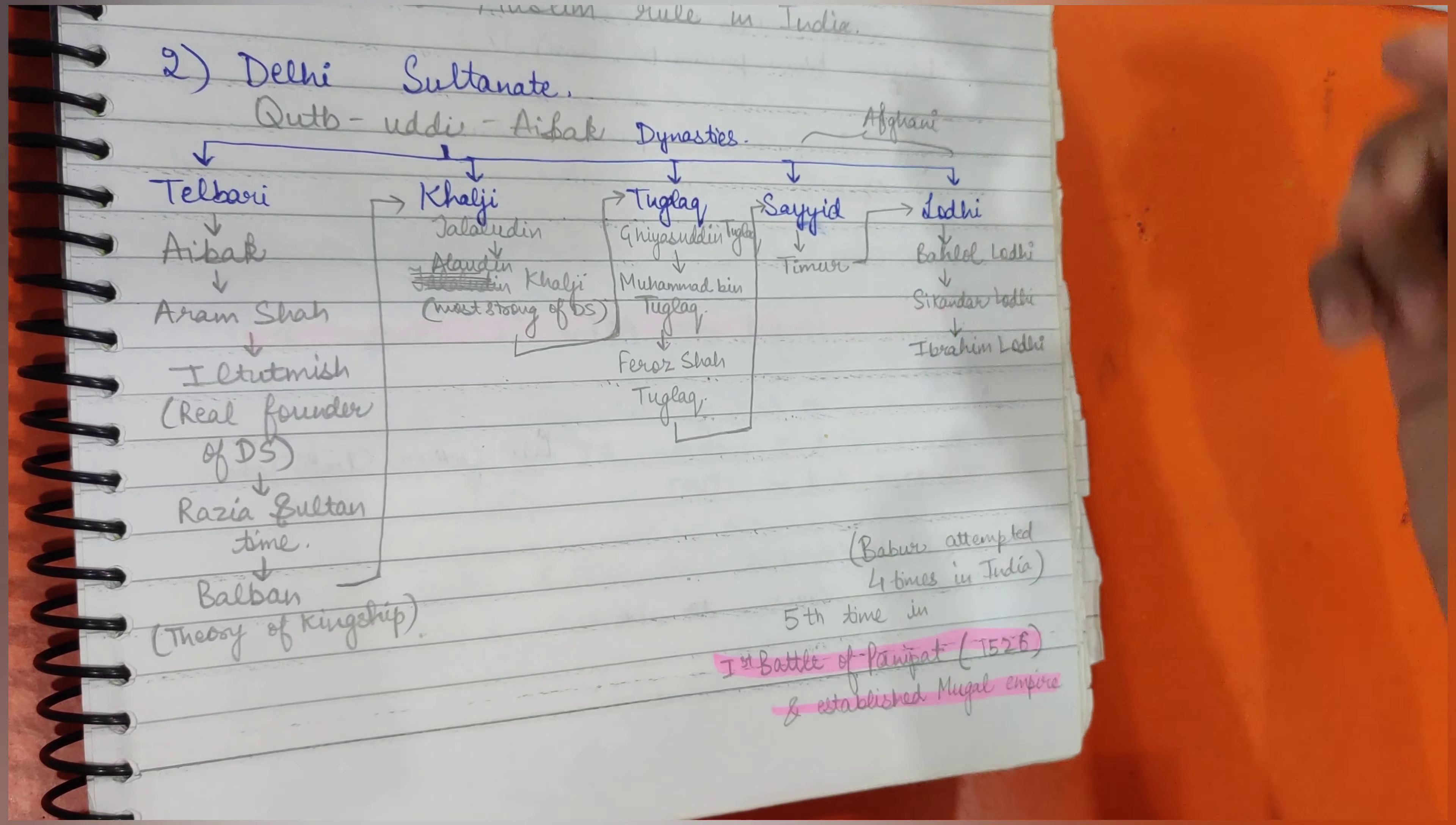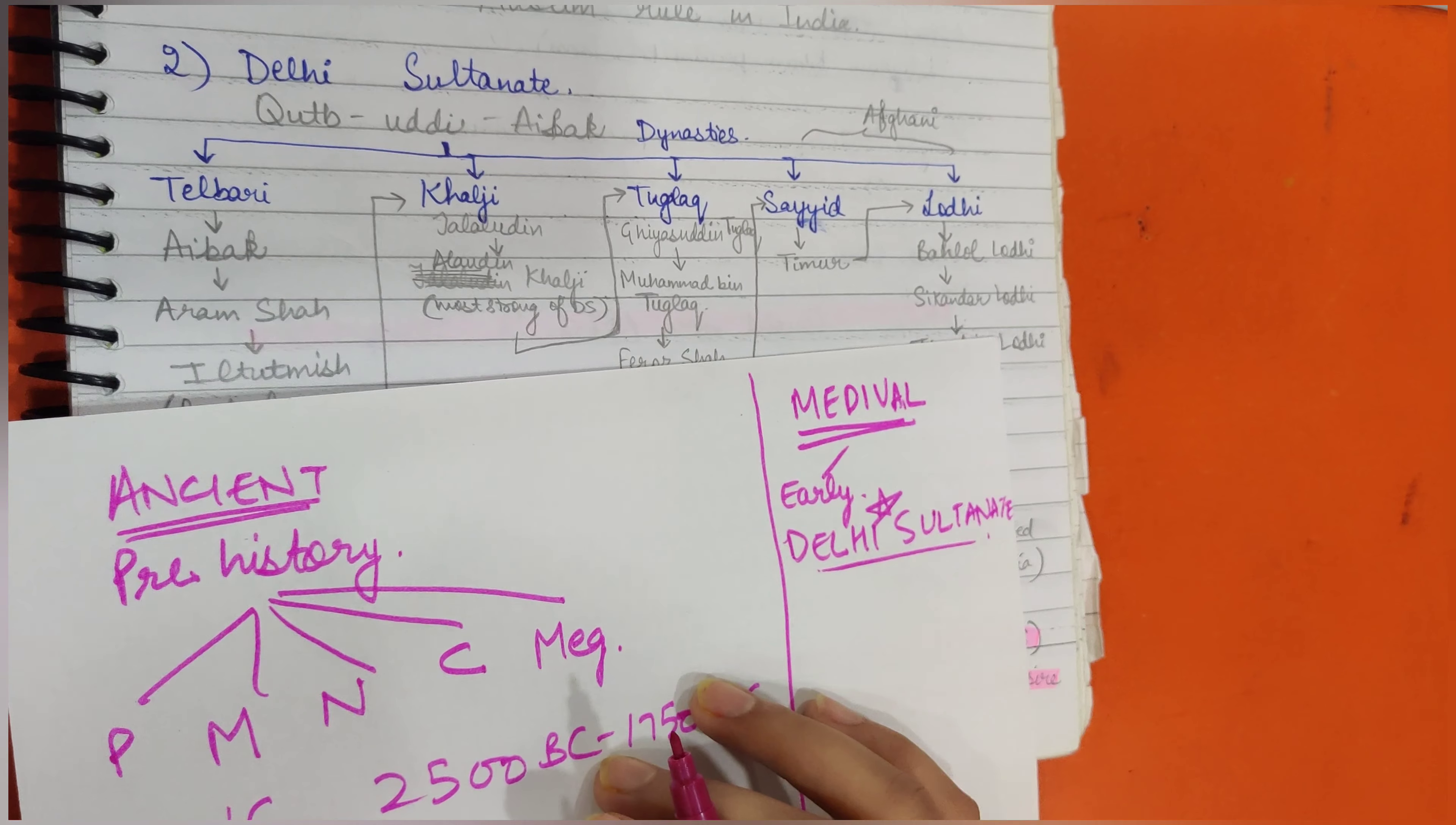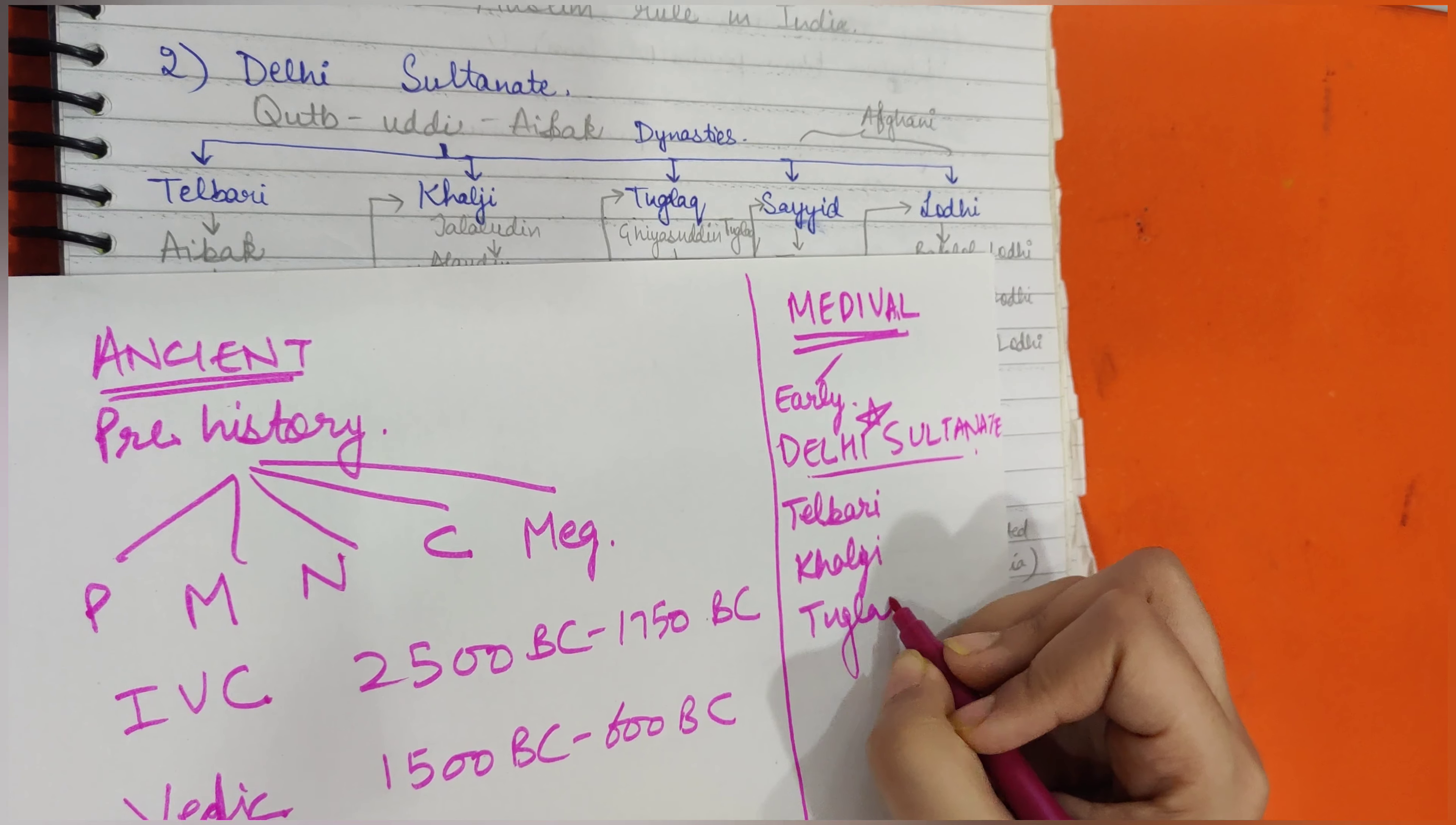Then we'll read about Delhi Sultanate. Delhi Sultanate is a very important part in medieval history. In this, we'll read chronologically about how the kings came. First came the Tughluq dynasty, then came the Khalji dynasty, then came the Tughlaq dynasty.